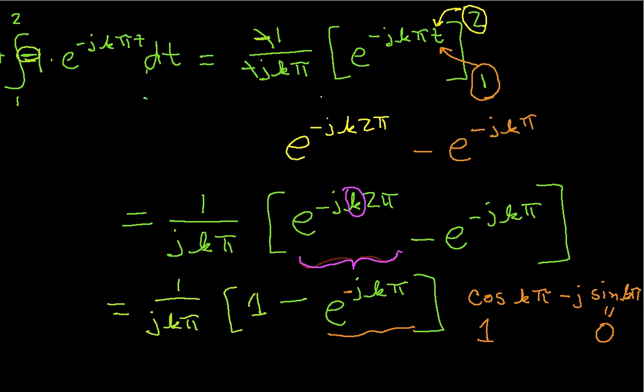The cosine of 2π is 1. And so this cosine will be equal to 1 if k is even. And if k is odd, then I have the cosine of π or the cosine of 3π or something like that, and that would be negative 1.